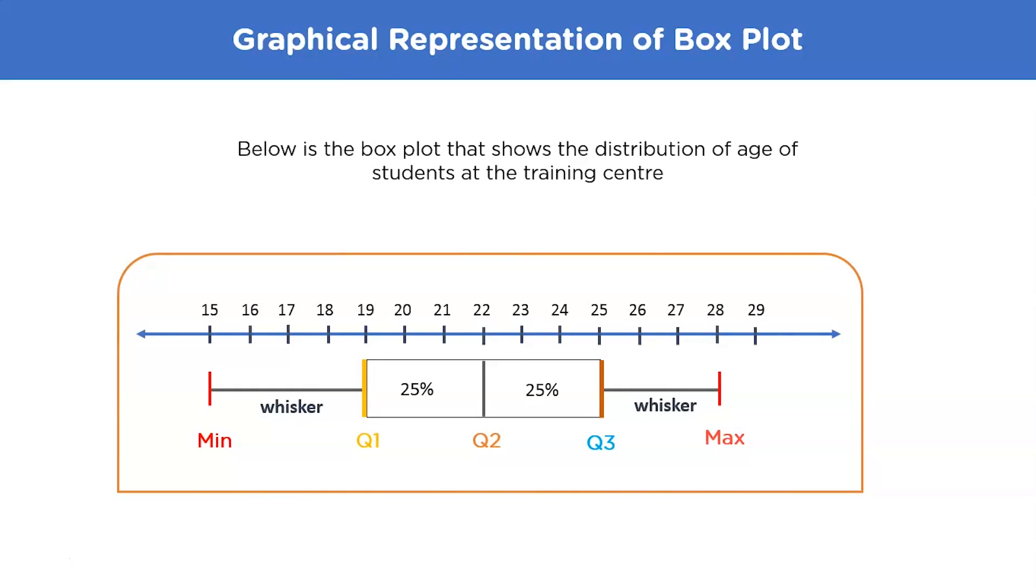So the lowest age among the students at the training center is 15, excluding the outliers. About 25% of the students are under 19 years of age and close to 50% of the students are between 19 and 25 years of age. Nearly 75% of the students have an age less than 25 and the maximum age among the students is 28, excluding outliers. Now that we know how to create a box plot,